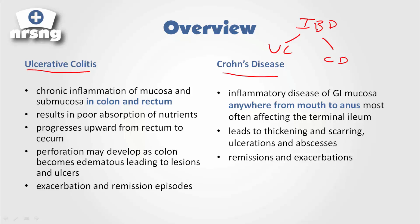So let's talk about the difference between the two, and the difference is really what part of the bowel they're affecting. With ulcerative colitis we're talking about chronic inflammation of the mucosa and submucosa of the colon and rectum. Whereas with Crohn's disease we're talking about inflammatory disease of GI mucosa anywhere from mouth to anus, most often affecting the terminal ileum.